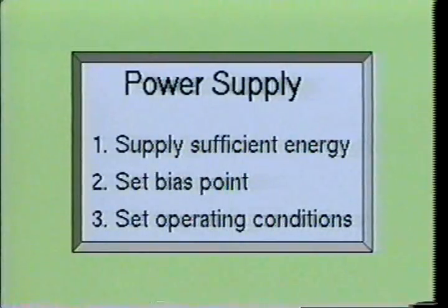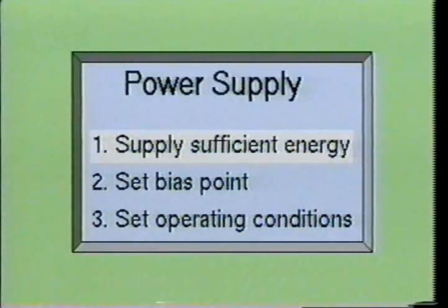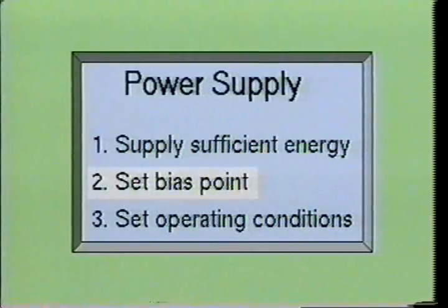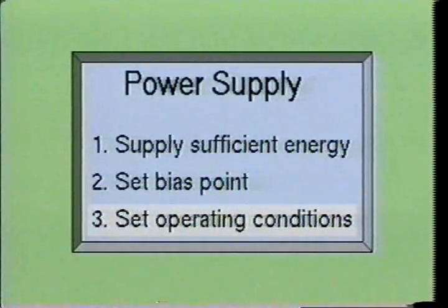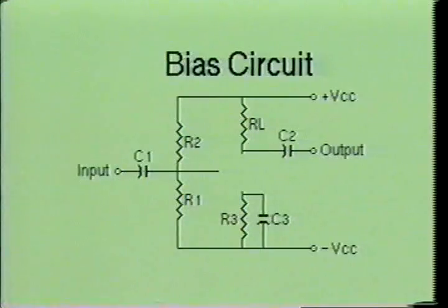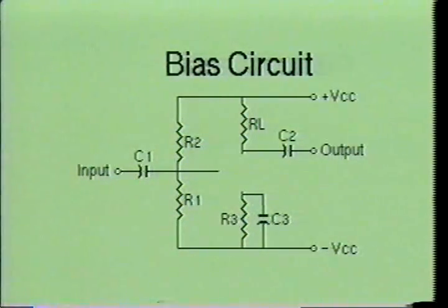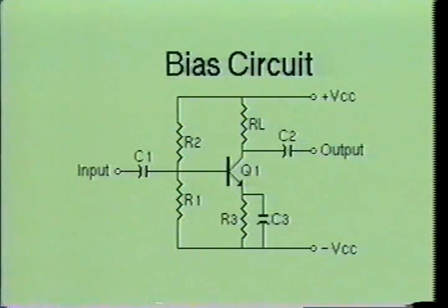When working with amplifier circuits, the DC power supply must satisfy three requirements: it must supply sufficient energy to the amplifier stage, it is used to set the operating point of the device for proper operation, and it is used to set the electrical operating conditions of the amplifier. The DC circuit used to set the operating conditions of the amplifier is referred to as the bias circuit. The bias circuit should prevent changes in the operating conditions, even if the amplifying device's characteristics change during normal circuit operations. A well-designed circuit will provide for stable circuit operation.